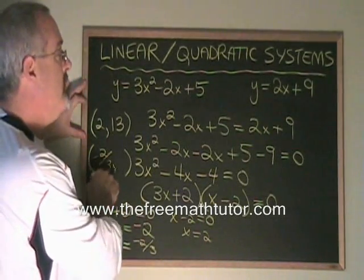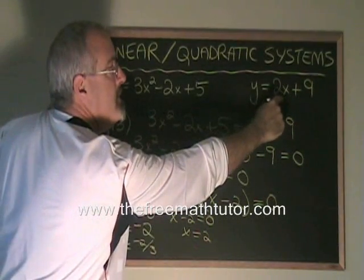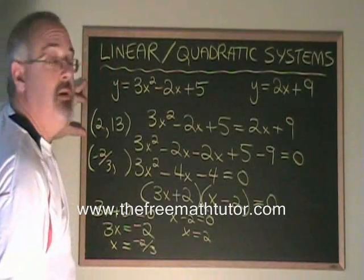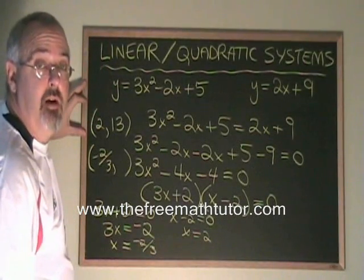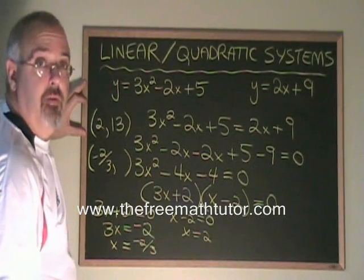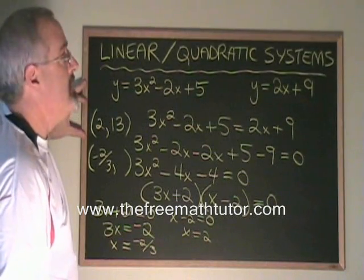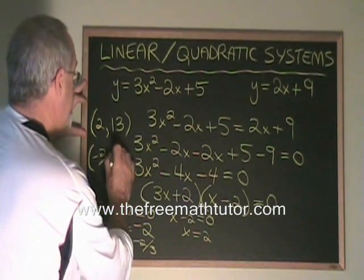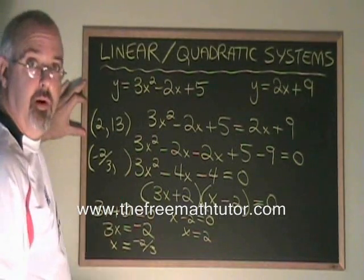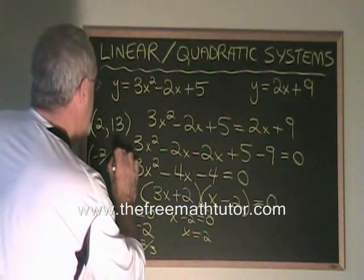If I plug negative 2 thirds into this x position, I get y equals 2 times negative 2 thirds plus 9. y equals negative 4 thirds plus 9. y is therefore equal to 7 and 2 thirds. If I write that as an improper fraction, it's 23 thirds.